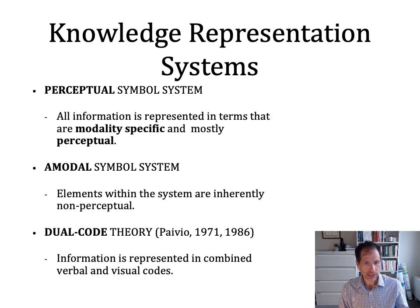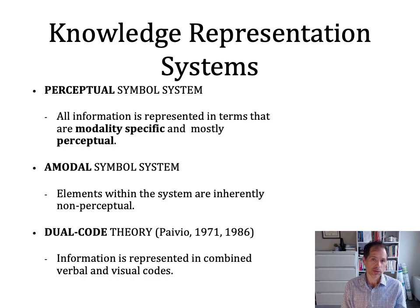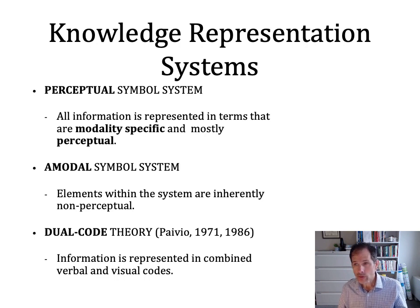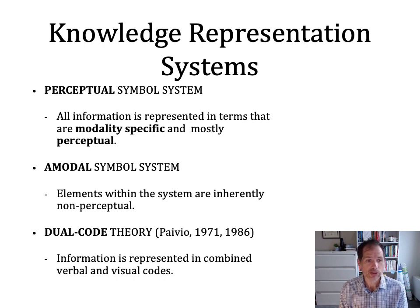Amodal symbol systems, on the other hand, assume that some of our knowledge and some of our ideas and representations and memories are inherently non-perceptual, that we can store information in ways that doesn't necessarily include perceptual information. And also it emphasizes the way in which these ideas are related to each other in terms of ideas, features, and names rather than perceptual aspects.